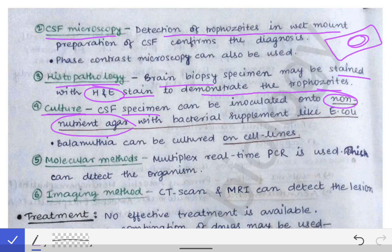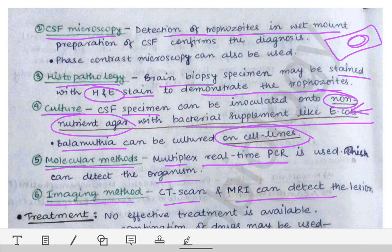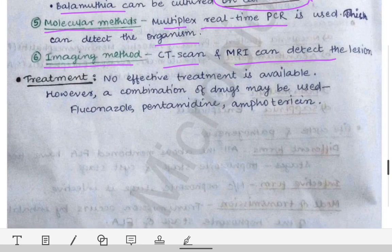The CSF specimen is inoculated on non-nutrient agar with bacterial supplements like E. coli — this is an important point, as this differs from the nutrient agar used in other contexts. Balamutia can be cultured on cell lines, similar to viruses. Molecular methods include multiplex real-time PCR for detection and identification. Imaging methods like CT scan and MRI can also be used to detect brain lesions.